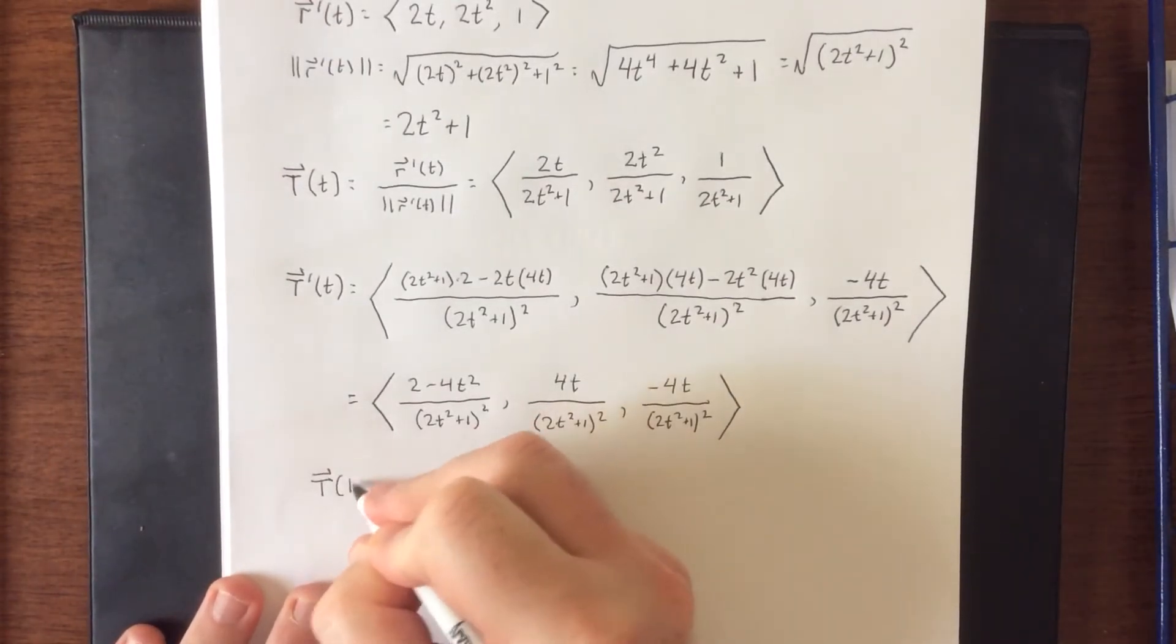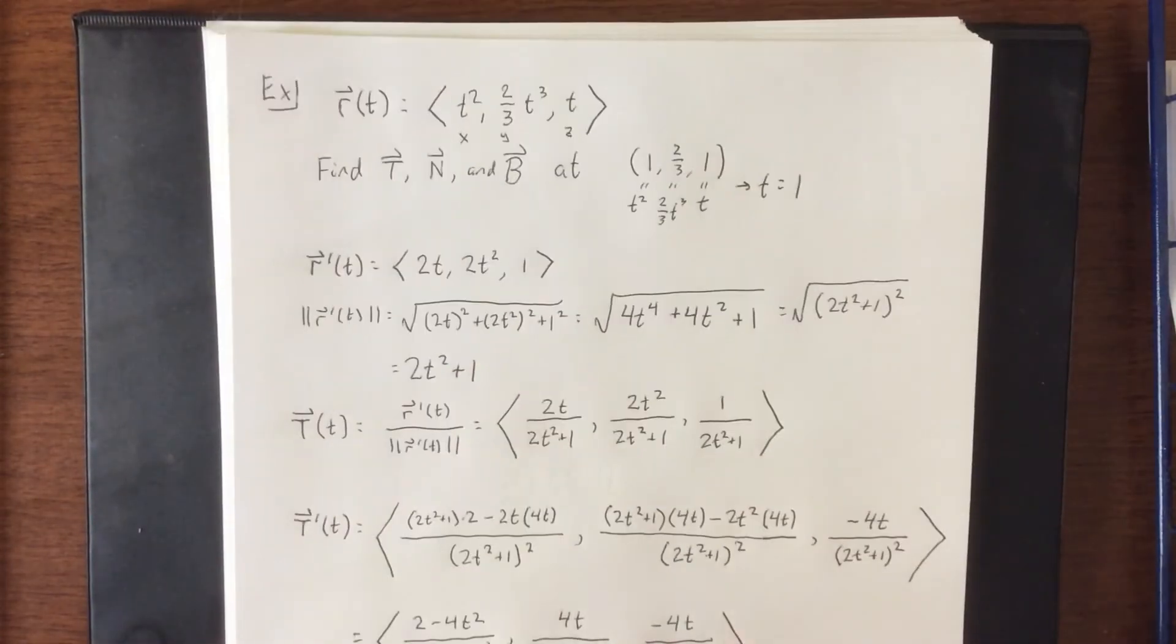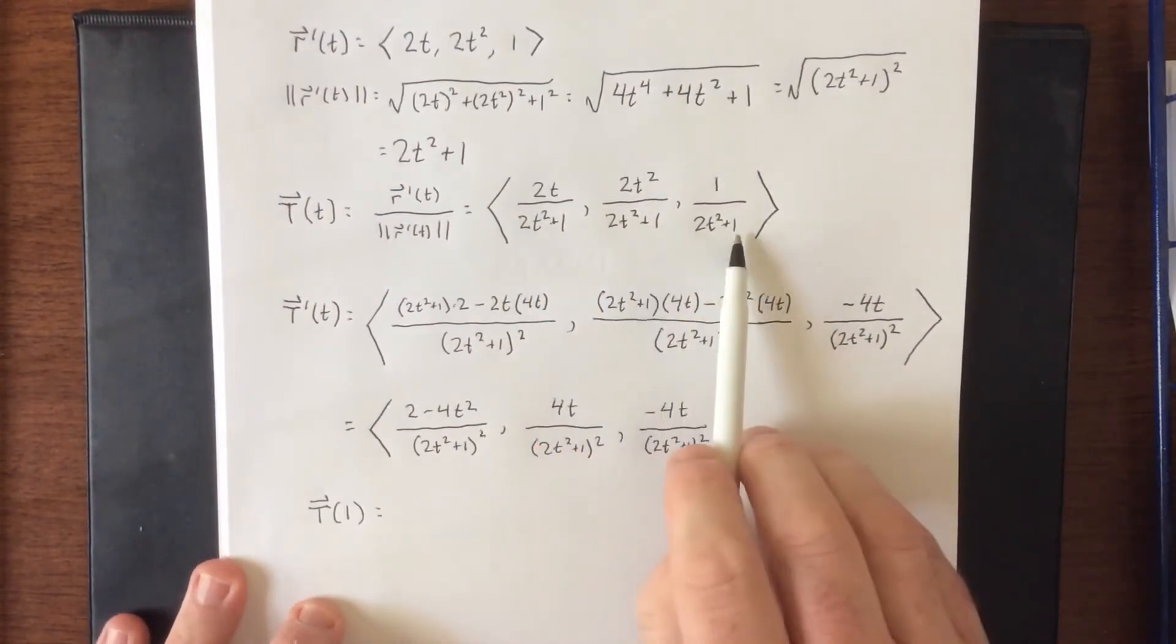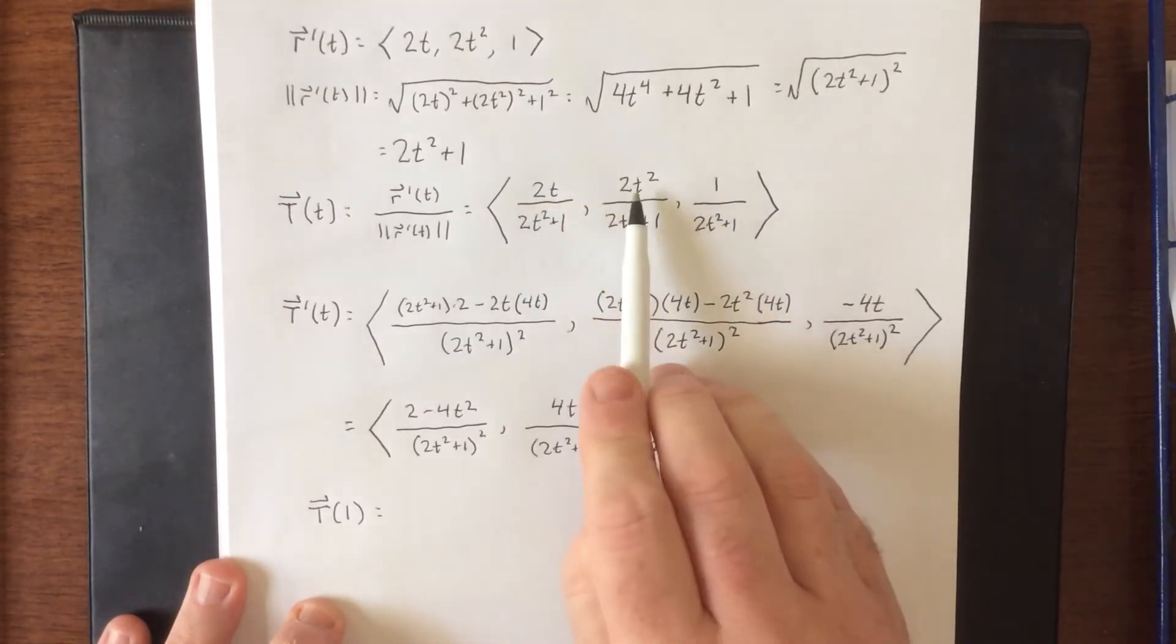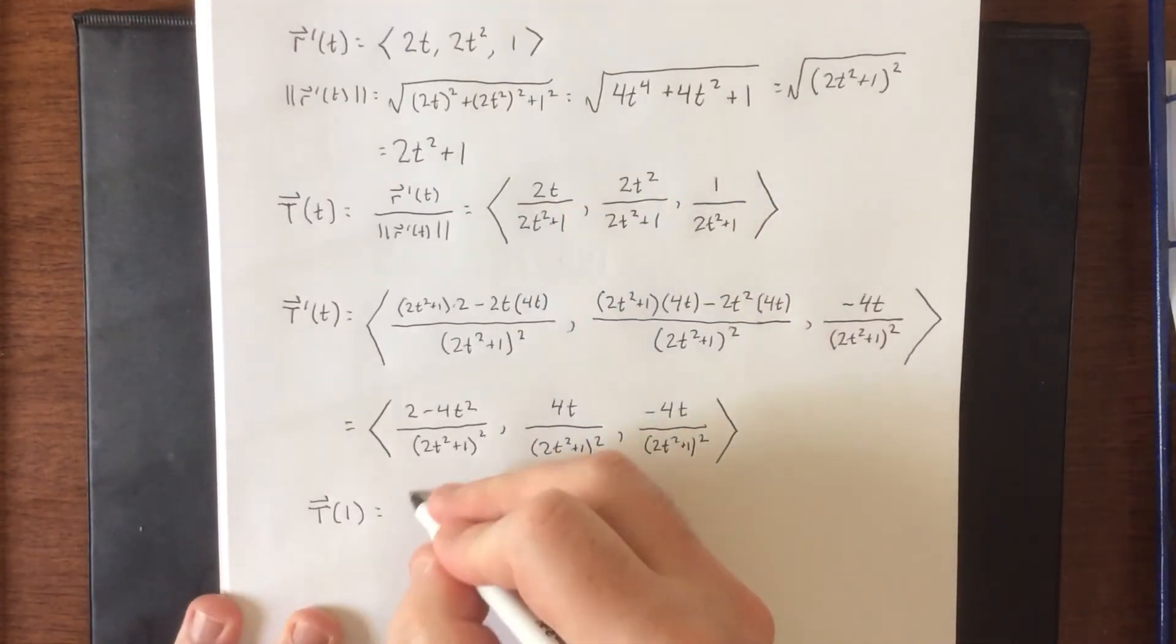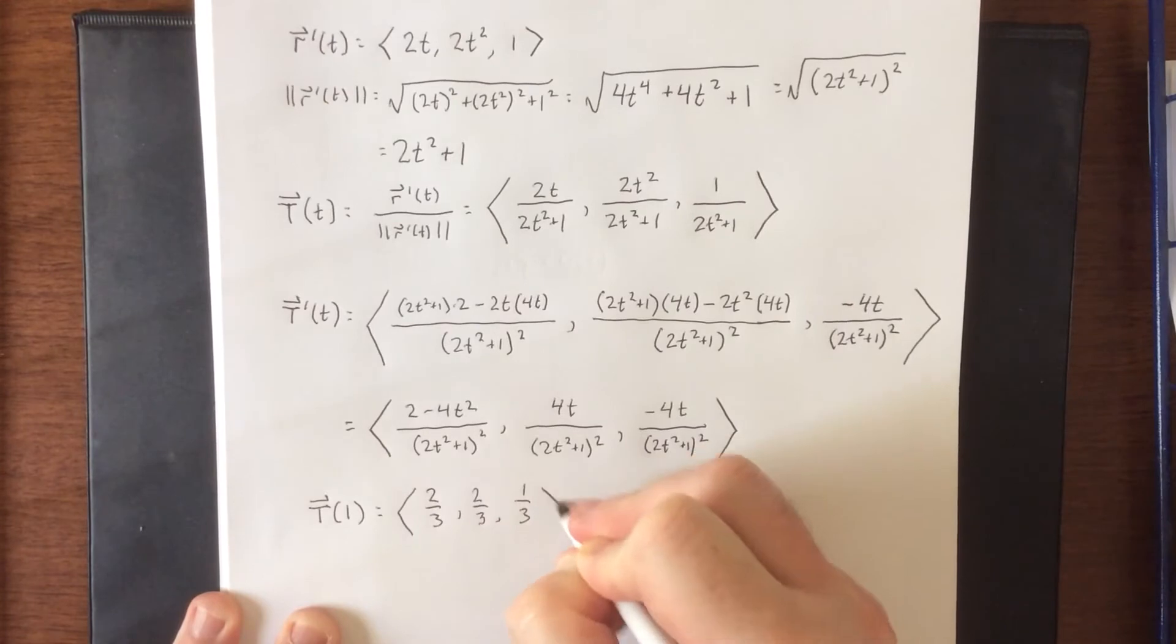So first off, T of 1, which is requested back as part of the original problem. We head right up here, and we plug in at t equals 1. Your numerators will be 2, 2, and 1. Your denominators will be 3, 3, and 3. So this will be 2 thirds, 2 thirds, and 1 third.